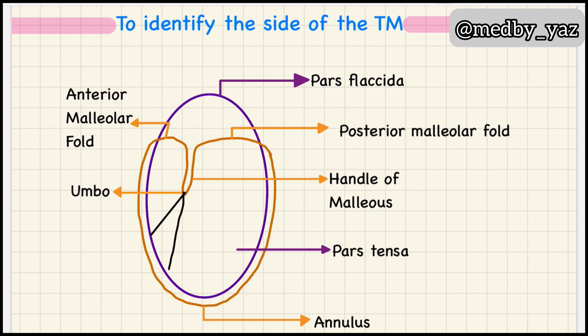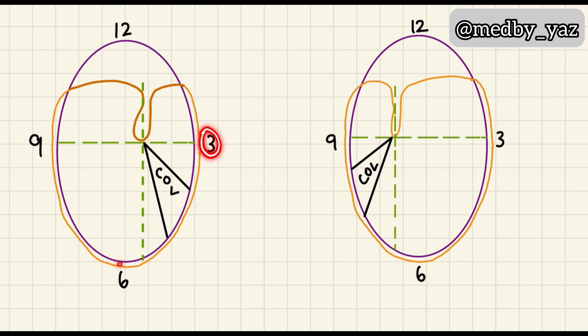Cone of light by default falls on the anteroinferior quadrant. So now if you see, when the cone of light is in between the 3 and 6 o'clock position, it is the right sided TM.